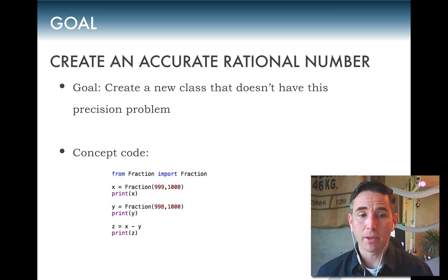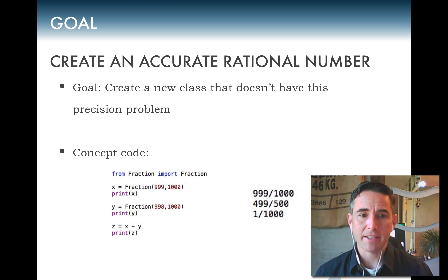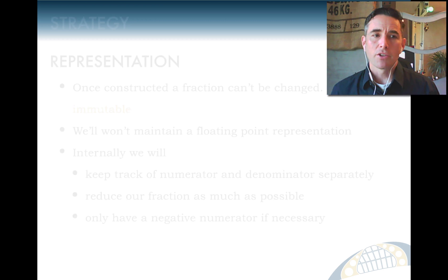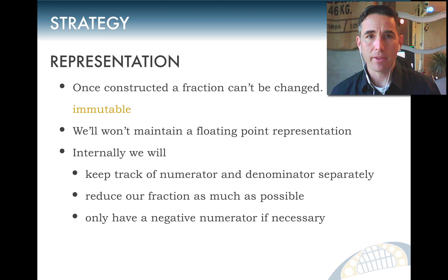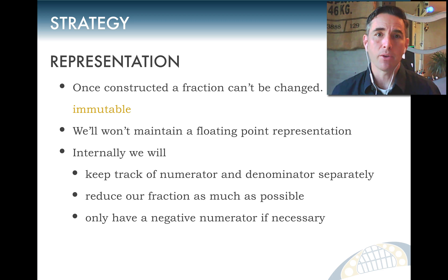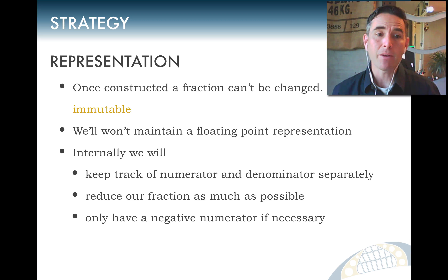We want to create a variable X where 999 and 1000 get passed to a fraction class as the numerator and denominator. When we print it, it retains its fractional representation — printing 999 over 1000. Then we create a second fraction Y as 998 over 1000, and want the class to support mathematical operations like X minus Y.